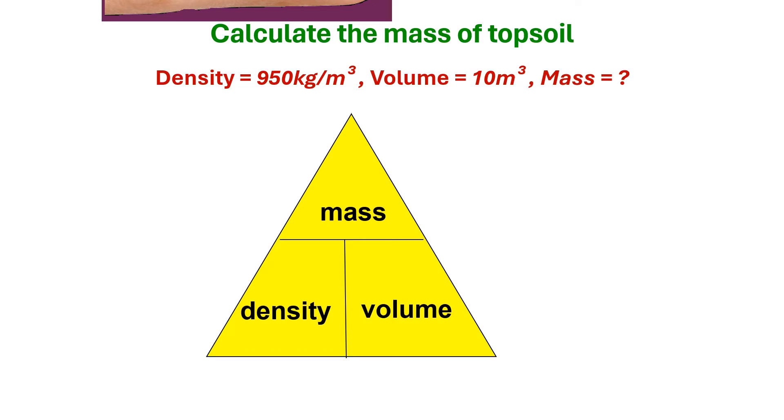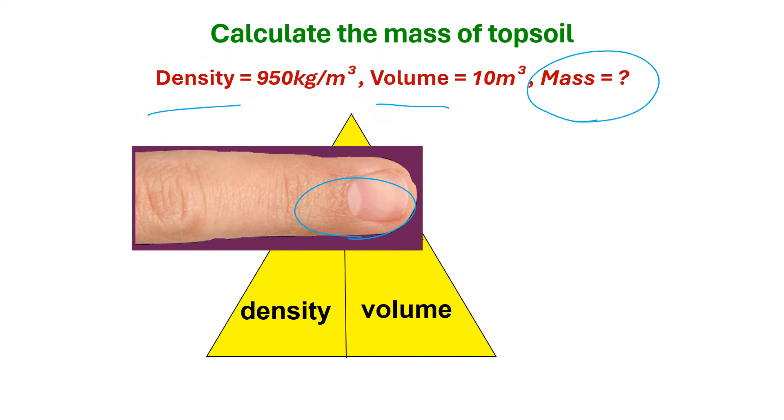Okay, so let's now solve this using the density pyramid. We know density, we know volume, mass this time is our mystery figure. That's the one we cover up with the finger. And because density and volume are on the same row, we are going to multiply these. So our formula to calculate mass is density times volume.